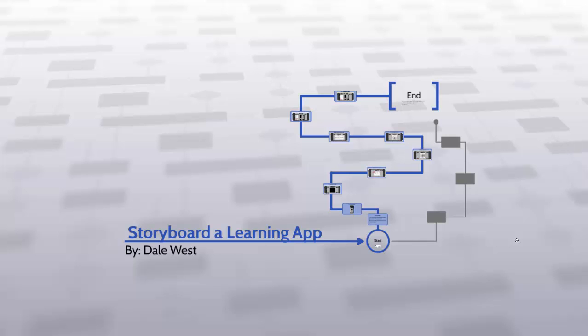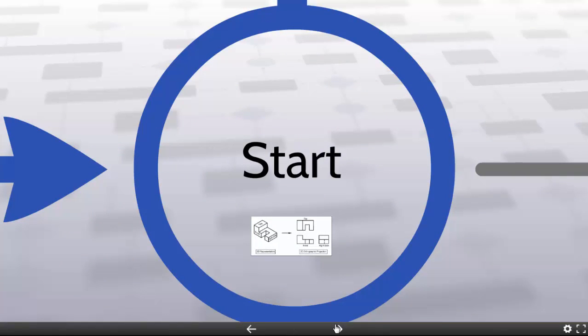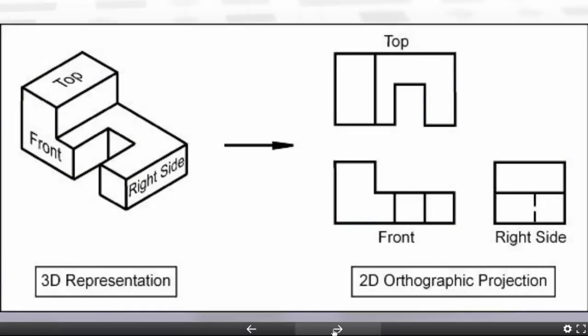The project is going to focus on storyboarding a learning app. I identified an area that my students are commonly struggling in. The area identified is Orthographic Projection, which is the ability to visualize and create 2D views of a model based on its 3D representation. This is a skill that is very important to my class that some students definitely struggle with in the beginning.